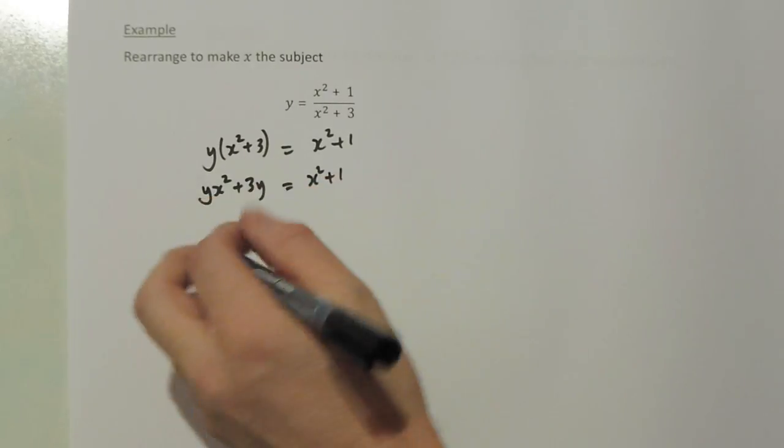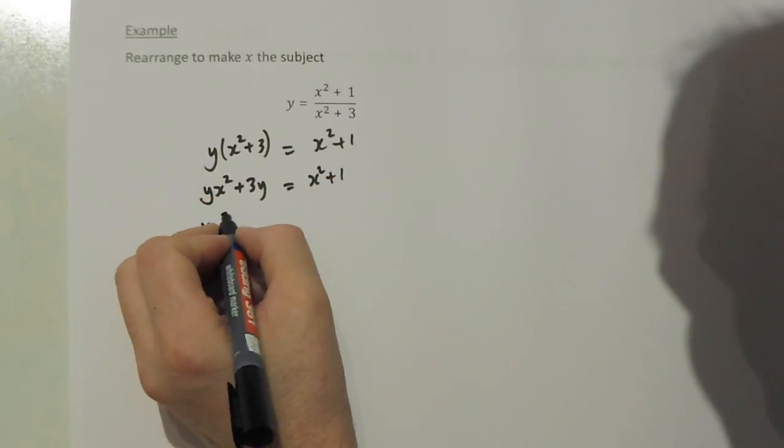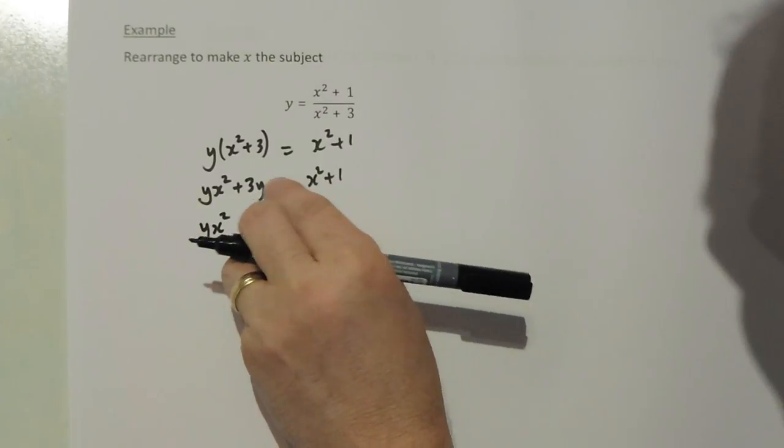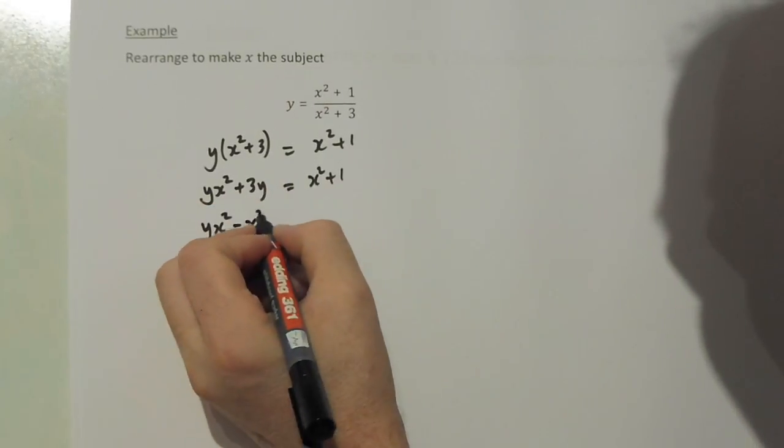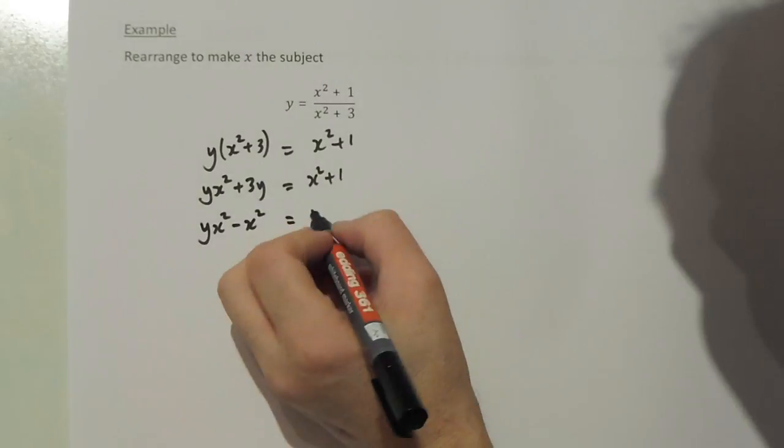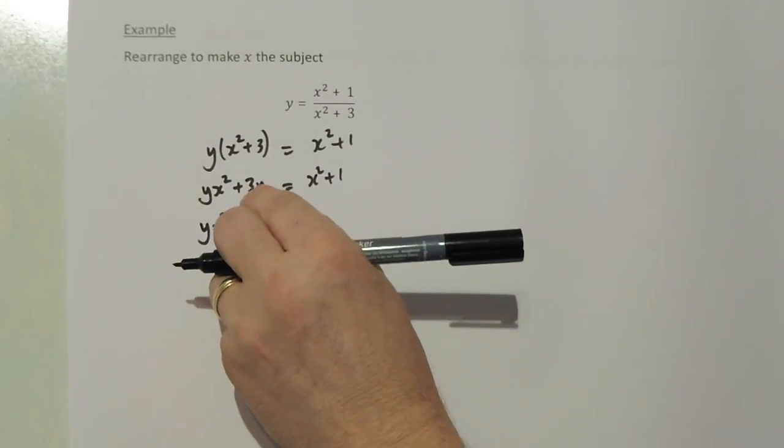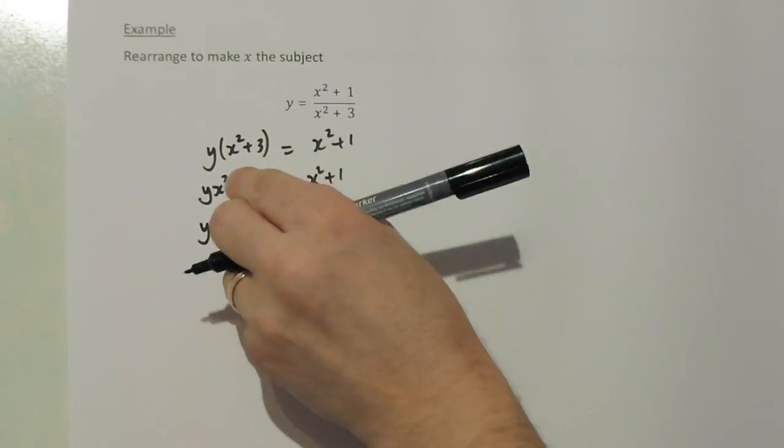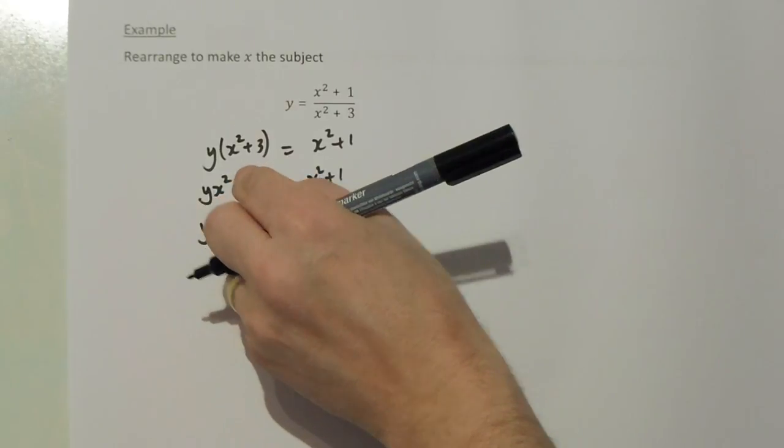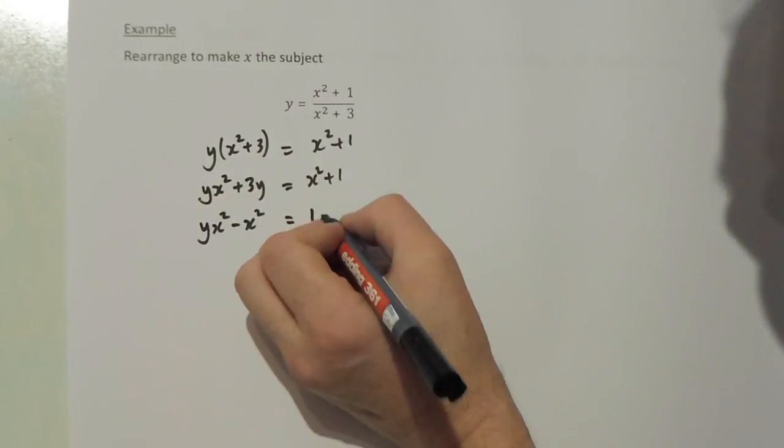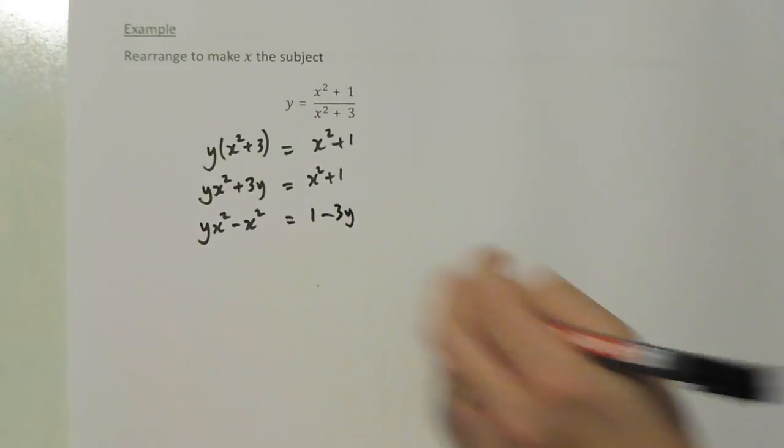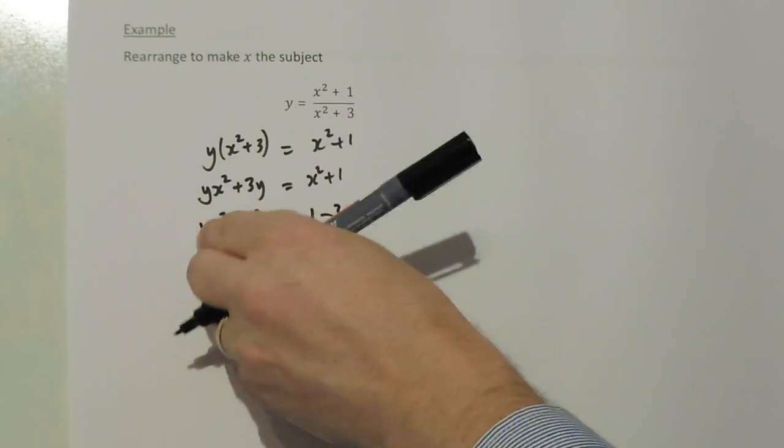So that x value needs to be over here to join that x value. So yx squared, move this one across becomes take x squared. That means that I have 1 on this side. I'm going to move the 3y over here because it has no mention of the letter x. So 3y becomes take 3y. So here I have isolated the letter x, it's all over here.